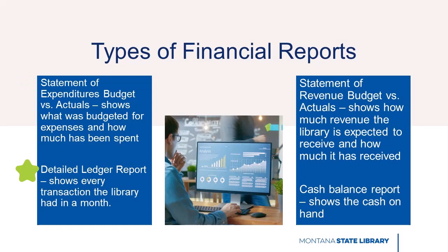Detailed ledger report — that shows every transaction the library had in a month. Budget vs. Actuals for revenue — shows how much revenue the library is expected to receive and how much it has received. A cash balance report shows the cash on hand.